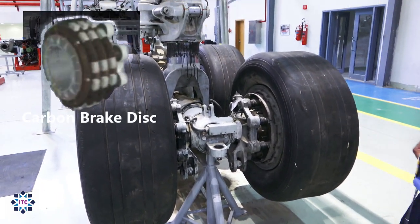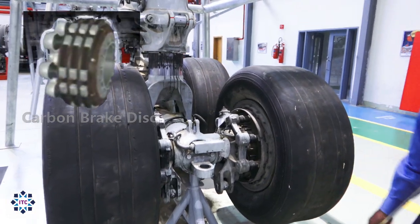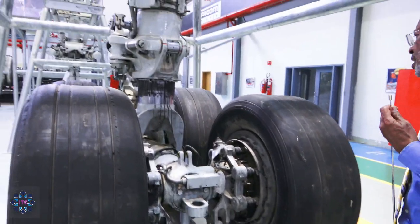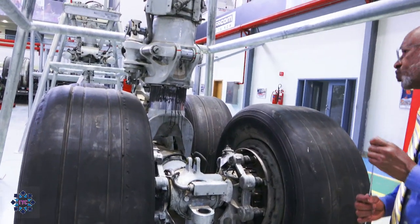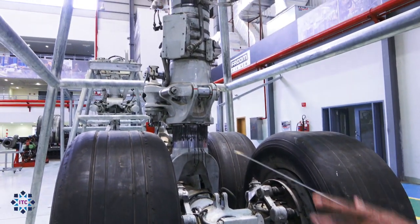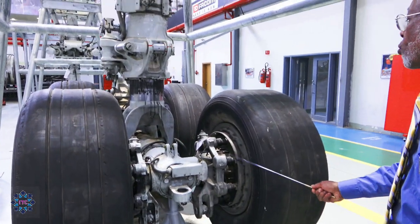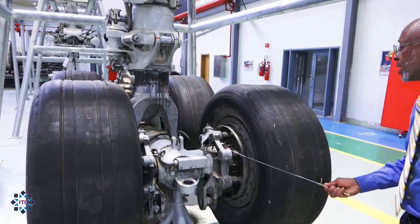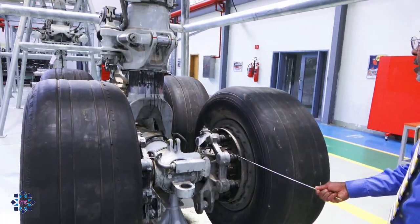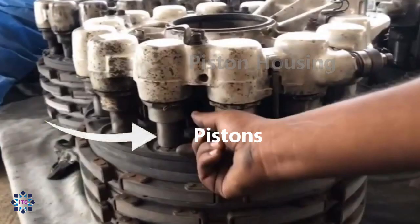Now we have carbon brakes. The carbon one is lighter, very effective, lasts longer, and is also cheaper in price. The brake consists of rotary and stationary discs, as well as pistons.